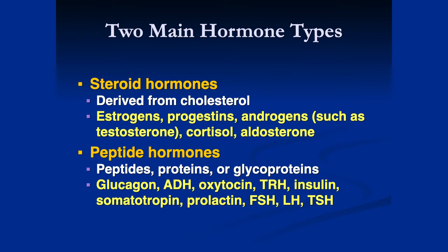A lot of these peptide hormones — follicle-stimulating hormone and luteinizing hormone, FSH and LH — are going to be involved in ovulation. To summarize: peptide hormones are proteins, and steroid hormones are lipids. So we have different types of hormones that are going to be used.